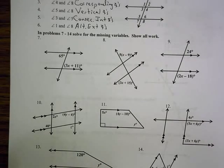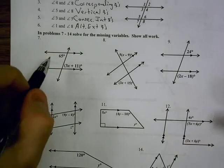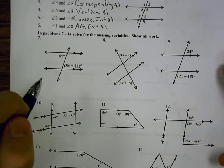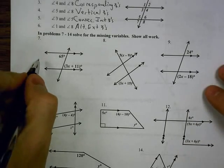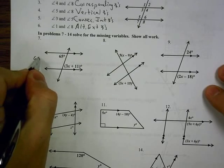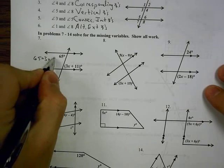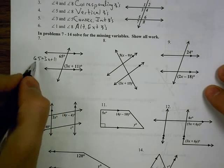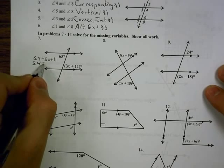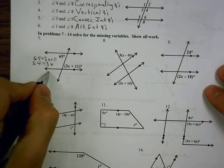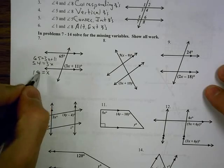Now we're going to solve with those angle pairs. Number 7, we're looking at alternate interior angles, and we have alternate interior, they're equal, so 65 equals 3x plus 11. By subtracting 11 from each side, I get 54 equals 3x, so x is 18.